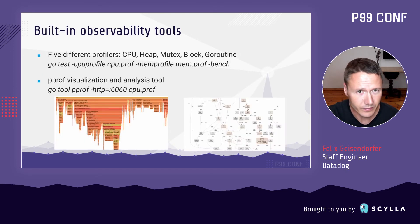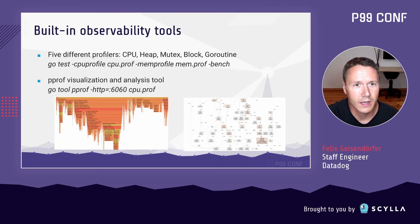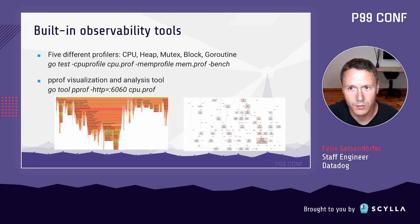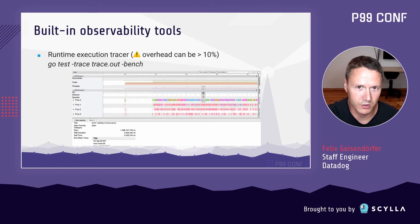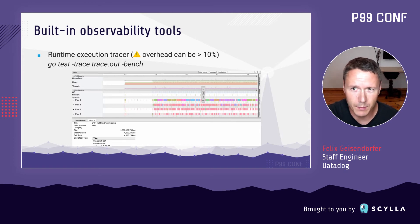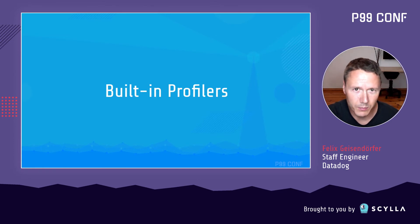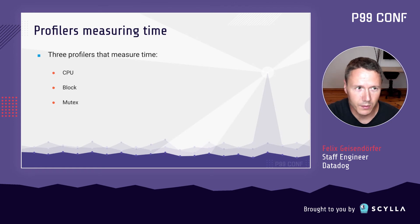Go ships with really nice tooling including documentation, testing, benchmarking, code formatting, tracing, and profiling. Go actually ships with five different profilers: CPU, heap, mutex, block, and goroutine. Invoking them can be as easy as passing a flag to the built-in test and benchmarking framework, and visualizing the data just requires another command-line tool that brings up a local web UI with flame graphs. Go also has a built-in execution tracer to debug problems such as latency introduced by the scheduler or GC — but be careful in production, as overhead can exceed 10 percent.